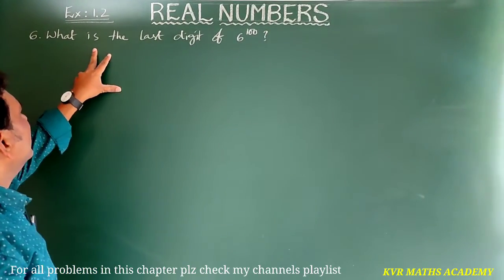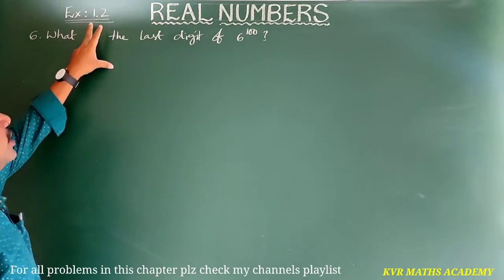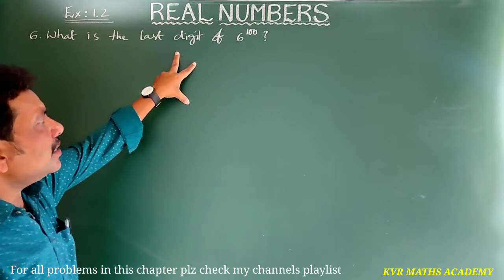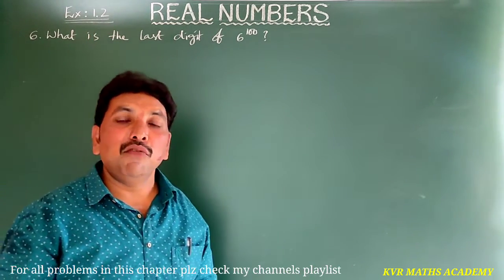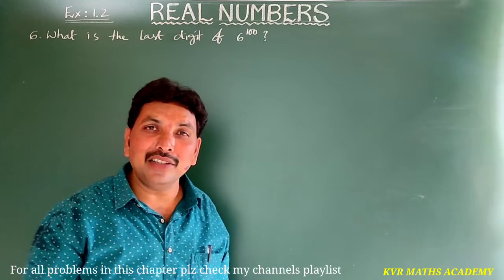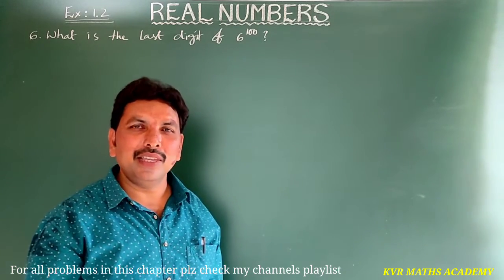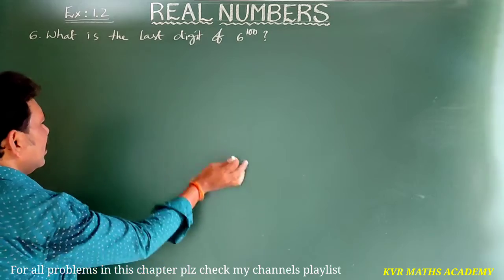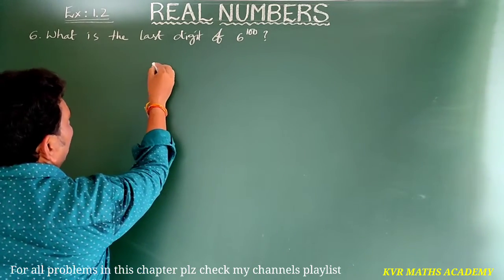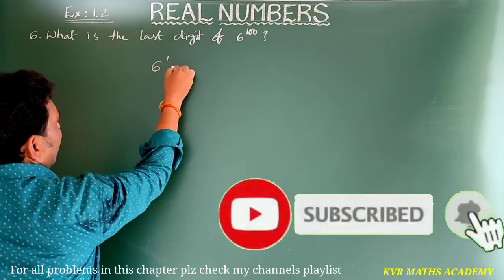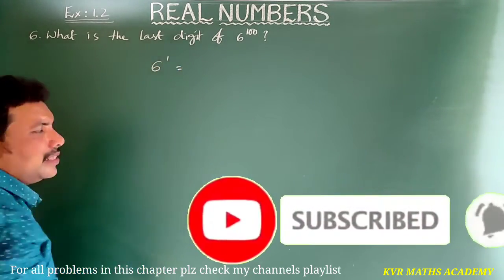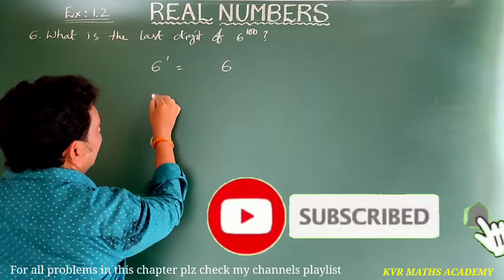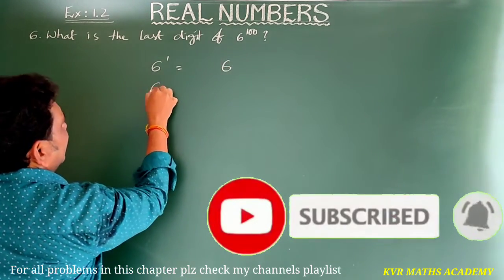Next, the sixth and final question in Exercise 1.2: what is the last digit of 6 power 100? Let us find it. Write one by one: 6 power 1 is equal to 6. 6 squared is 36.